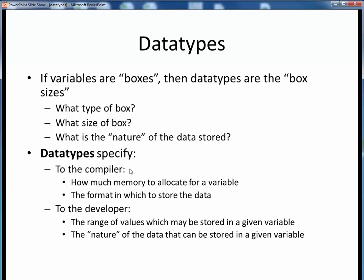Data types tell the compiler how much memory to set aside for any given variable, and in what internal format that data should be stored. For us as developers, data types tell us the range of values that a variable may have and the nature of the data we can store in any given variable.